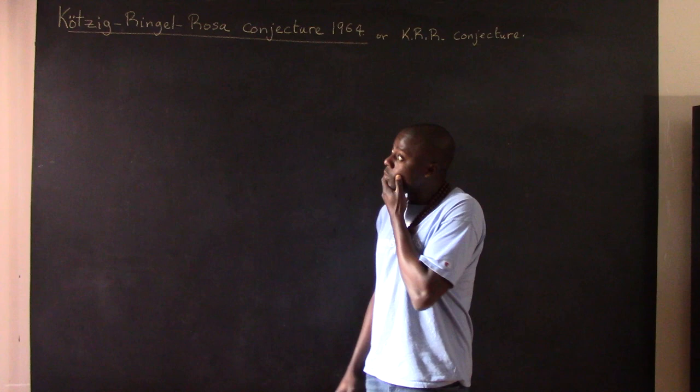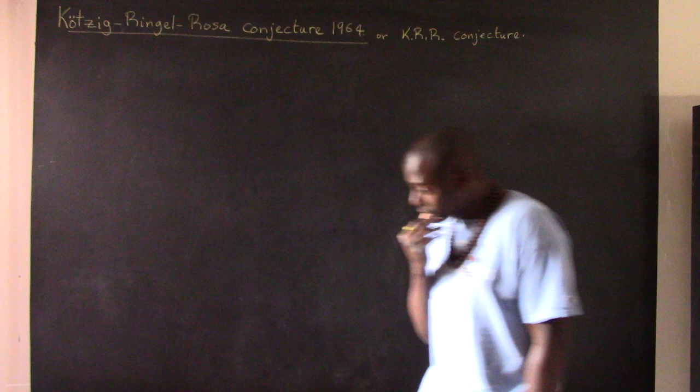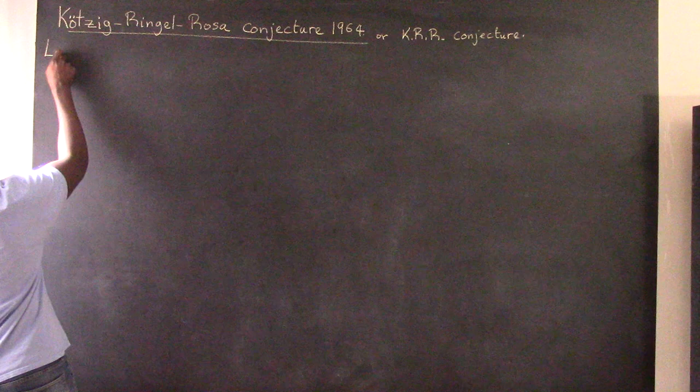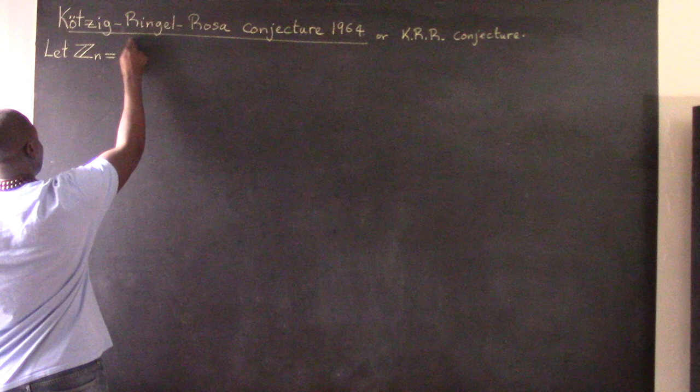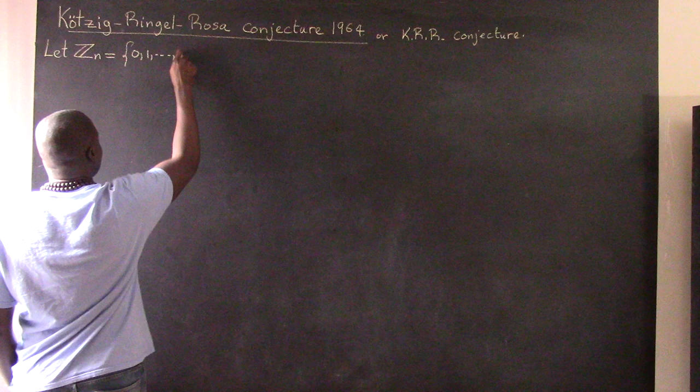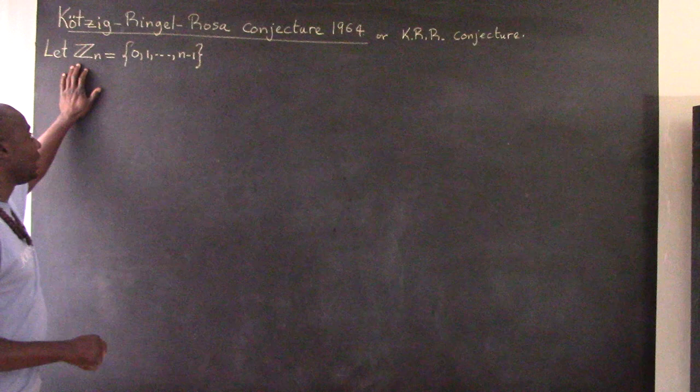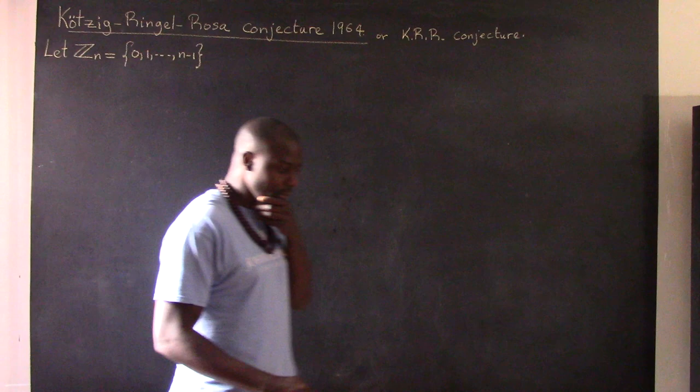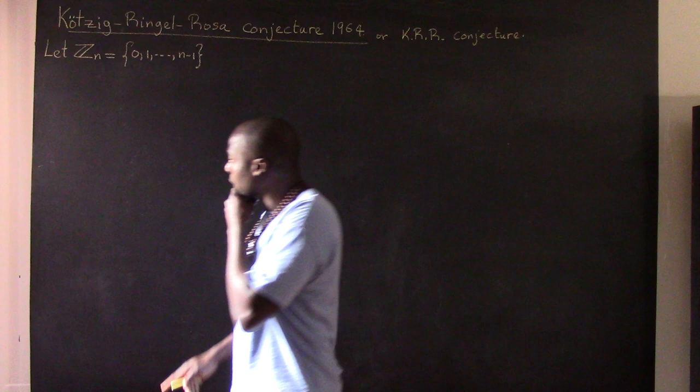So how do we set up the stage for the KRR conjecture? So first of all, I'm going to be working with integers. So let Z_n denote the set of numbers 0, 1, all the way up to n minus 1. So every time that I write Z_n, I'm really talking about integers starting from 0 all the way up to n minus 1. So there are n numbers because I started from 0.